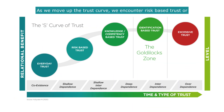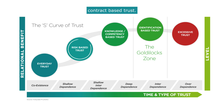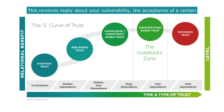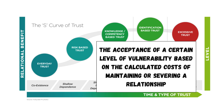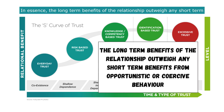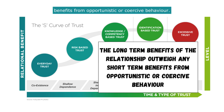As we move up the trust curve, we encounter risk-based trust, or contract-based trust. This revolves really about your vulnerability — the acceptance of a certain level of vulnerability based on the calculated costs of maintaining or severing a relationship. In essence, the long-term benefits of the relationship outweigh any short-term benefits from opportunistic or coercive behaviour.